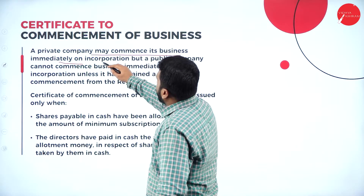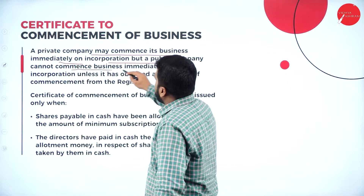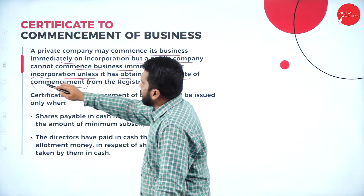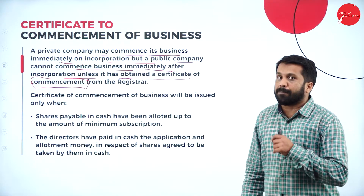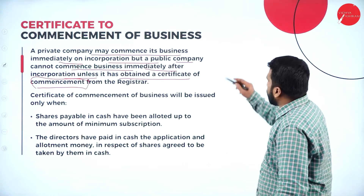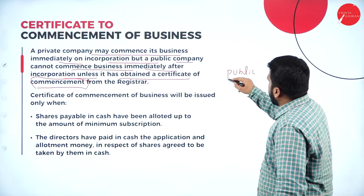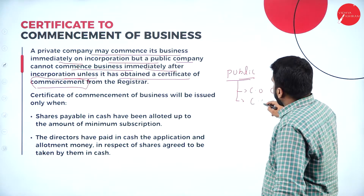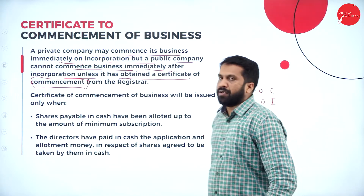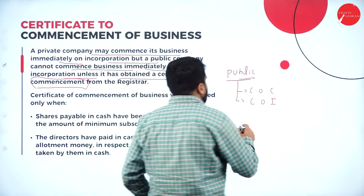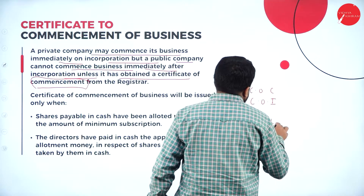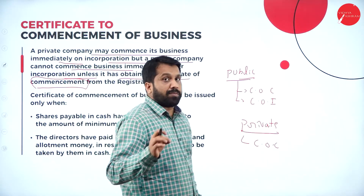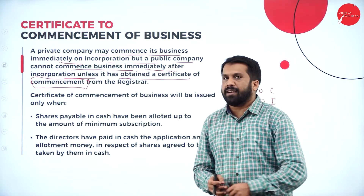A public company cannot commence business immediately after incorporation unless it has obtained a certificate of commencement. So, two certificates are required for a public company: first, the certificate of incorporation, and second, the certificate of commencement. For a private company, only the certificate of incorporation is needed.